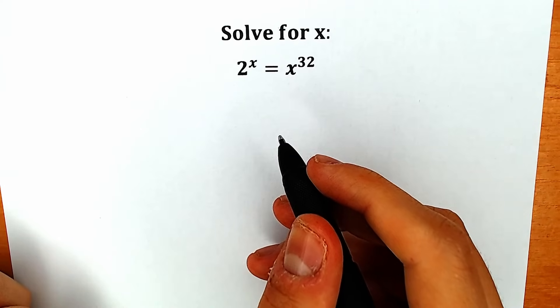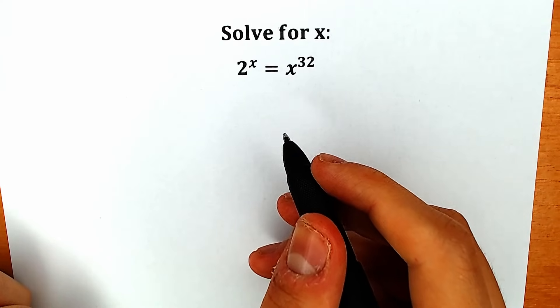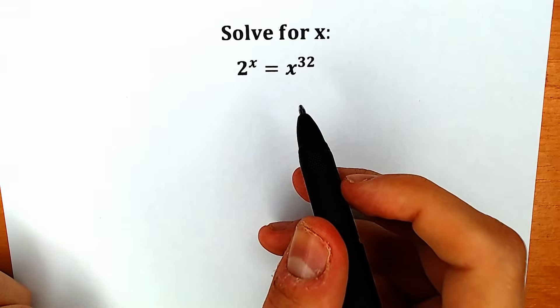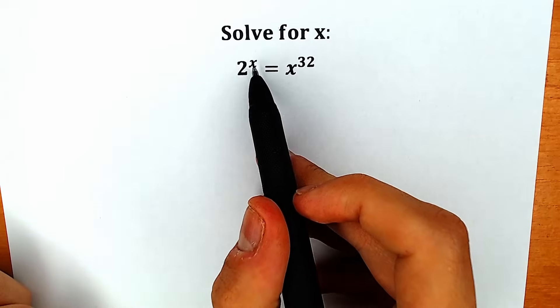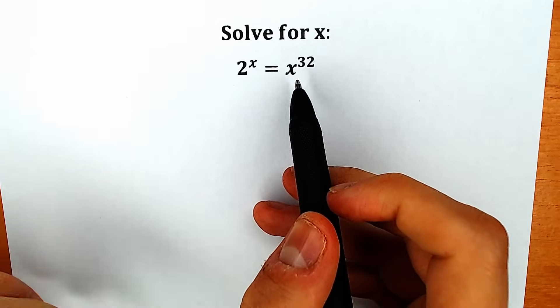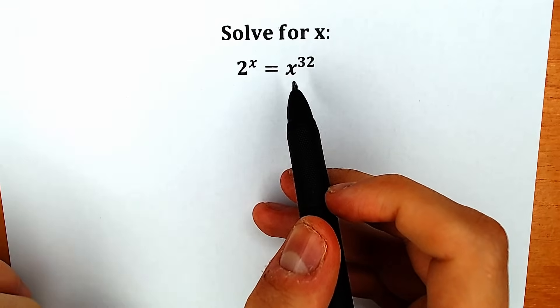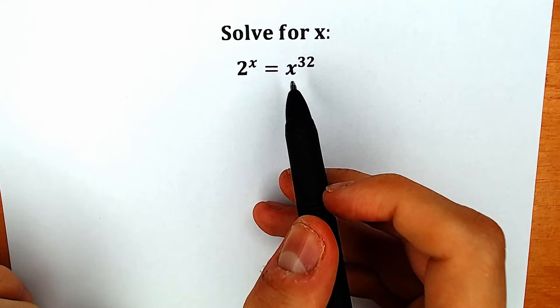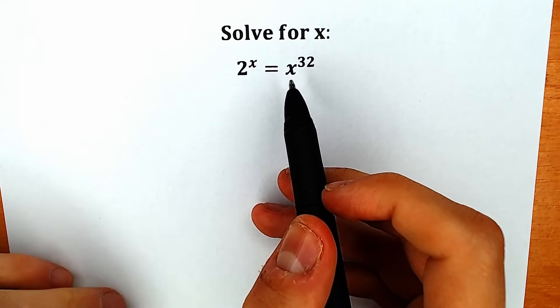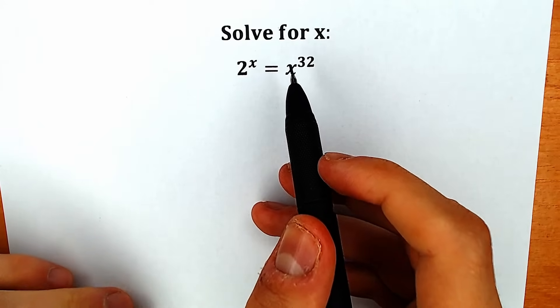Hello everyone, happy to see you here on my channel HireMathematics. Today we have a very interesting exponential equation: 2 to the x equal to x to the power 32. If you have your answer, your solution, you can write it down into the comment section and then we will check our answers.